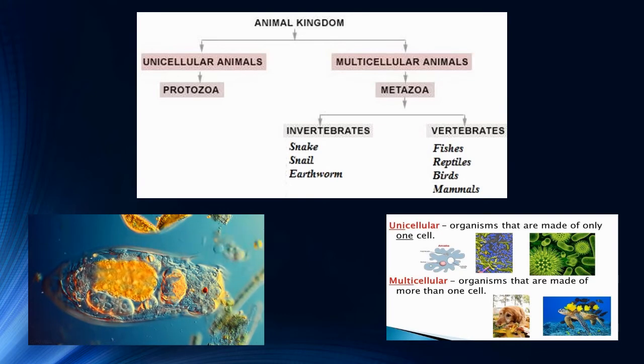On your slide you can see the animal kingdom. It is divided into two: unicellular animals and multicellular animals. In unicellular, it comes protozoa. And in multicellular, it comes metazoa. So in metazoa, there are invertebrates and vertebrates.